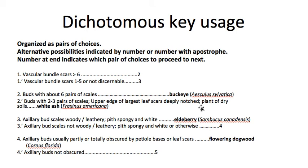Instead of a conceptual example, let's look at an actual dichotomous key — this comes from the twig key you will be using for this week's assignment, which is on Blackboard. Here we have a series of pairs of choices, and in each case there are two possibilities. The first is numbered by a normal number; the second is numbered with a prime symbol after it — so we say choice one or choice one prime. We always start at the top, looking at the number of vascular bundles, and if there are more than six we go on to question two.